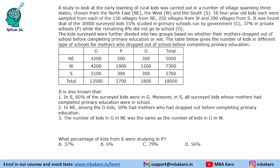It says that a study to look at the early learning of rural kids was carried out in a number of villages spanning three states chosen from the northeast, the west, and the south. So we are given three regions: northeast, west, and south, denoted by N, E, W, and S.